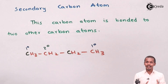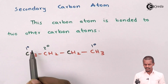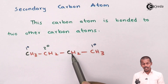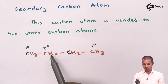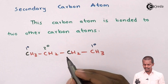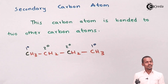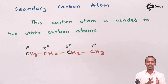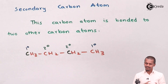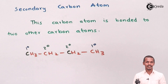Is there any other secondary carbon atom in this alkane? Yes — this carbon atom is also attached to two different carbon atoms, so it is also called a secondary carbon atom. The IUPAC name of this molecule is butane. So we have covered primary and secondary, and now let us move on to tertiary carbon atom.